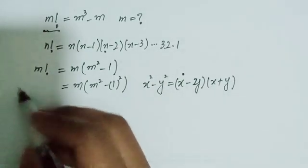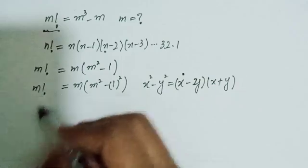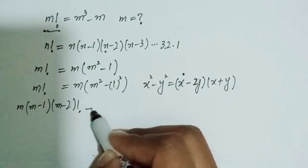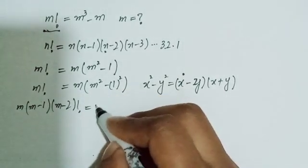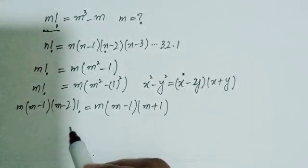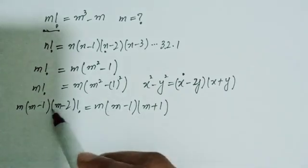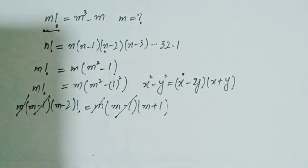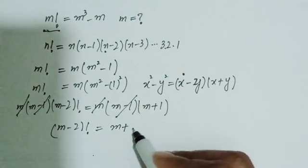Similarly, I can write m factorial as m times (m minus 1) times (m minus 2) factorial. The reason I expand it up to (m minus 2) factorial is so I can cancel these two terms. So from the cancellation, (m minus 2) factorial is equal to m plus 1.